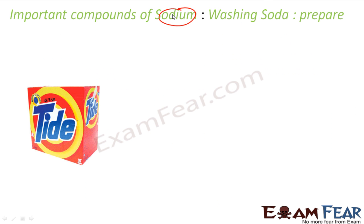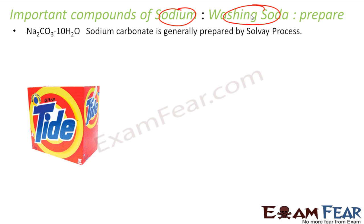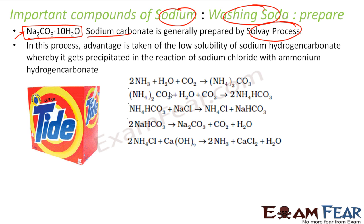Another important compound of sodium is washing soda, which we also use almost daily. Washing soda is nothing but Na2CO3·10H2O — sodium carbonate with 10 molecules of water. It is prepared by the Solvay process. In the Solvay process, sodium hydrogen carbonate is less soluble and gets precipitated out.